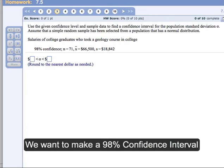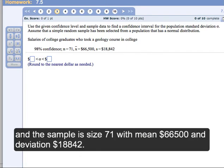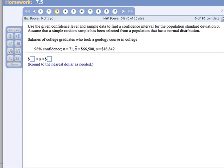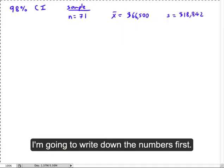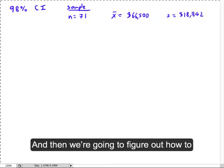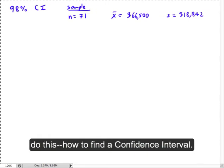The numbers we're given are: we want to make a 98% confidence interval, the sample had n equals 71, the mean of $66,500 with a standard deviation of $18,842. So I'm going to write down the numbers first on my paper here, and then we're going to figure out how to do this, how to find a confidence interval.